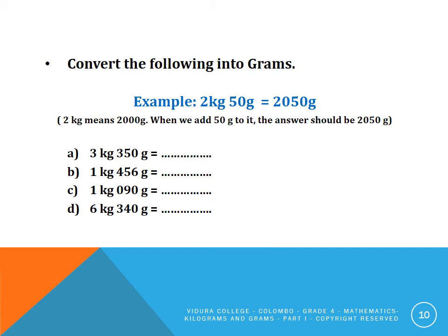Convert the following into grams. Look at the example: two kilograms and fifty grams. Two kilograms means two thousand grams. When we add fifty to it, the answer is two thousand and fifty grams. Now convert: A, three kilograms three hundred and fifty grams; B, one kilogram four hundred and fifty-six grams; C, one kilogram ninety grams; D, six kilograms three hundred and forty grams.